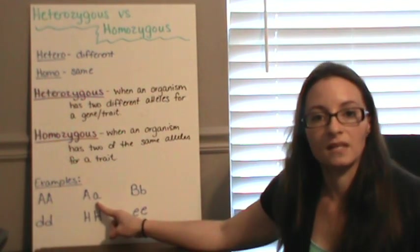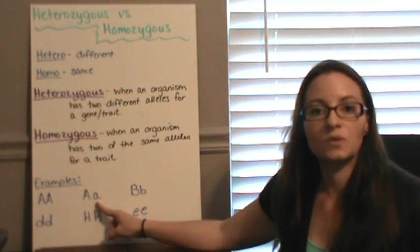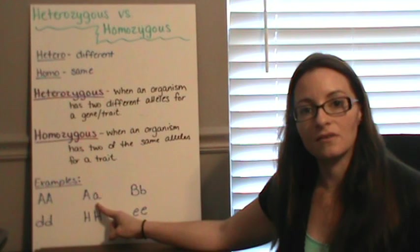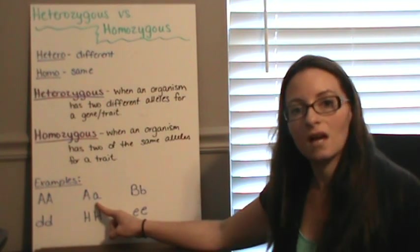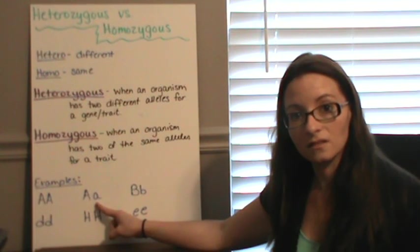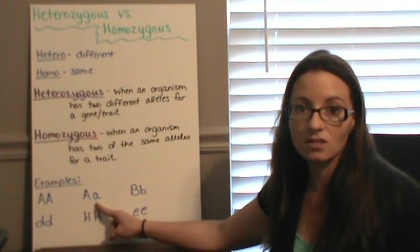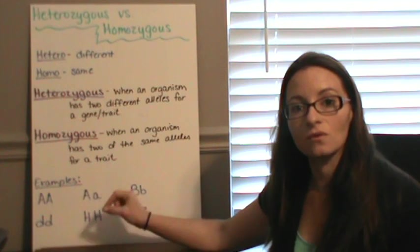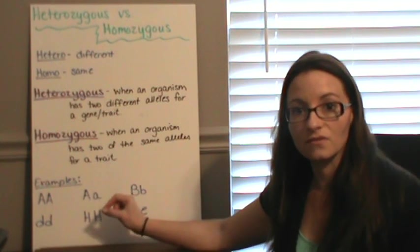This, upper case A, lower case A, this would be representative of a heterozygous organism. And we don't say heterozygous dominant because even though it shows the dominant trait, we're going to know it's showing the dominant trait because dominant is always going to show in the heterozygous form.